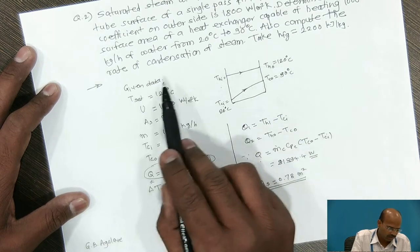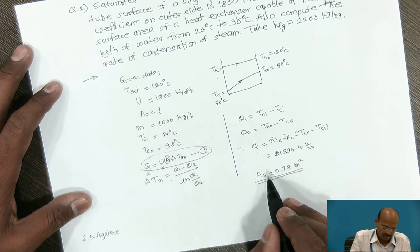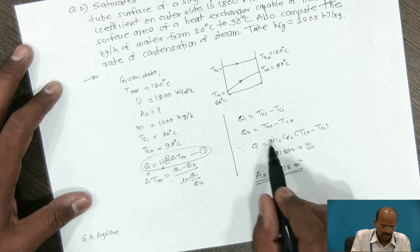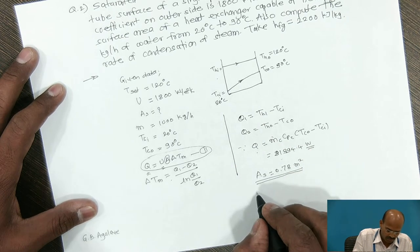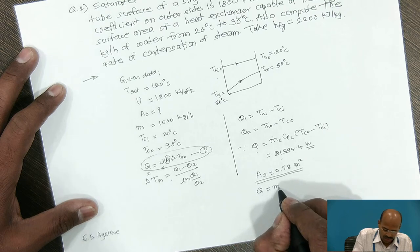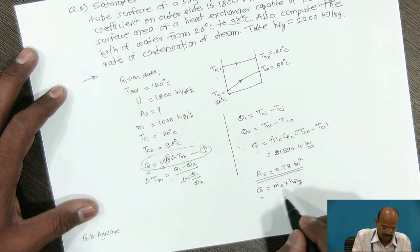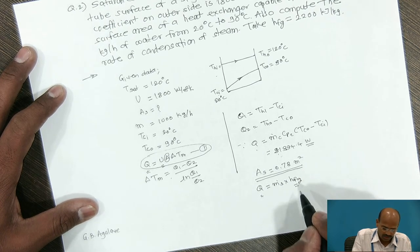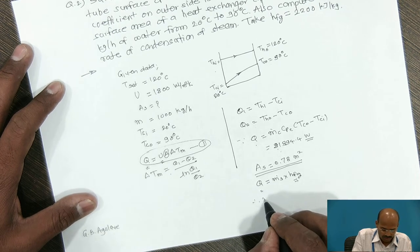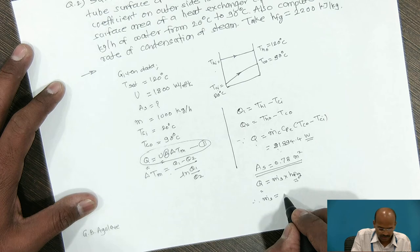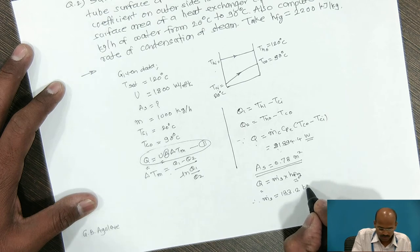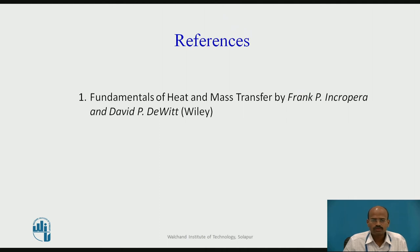To find the rate of condensation, this heat Q is rejected by the steam, so Q = m-dot_steam · latent heat. With Q calculated and latent heat given, the mass of steam condensed is 133.2 kg per hour. For further reference, you can refer to Fundamentals of Heat and Mass Transfer by Incropera and DeWitt. To be continued.